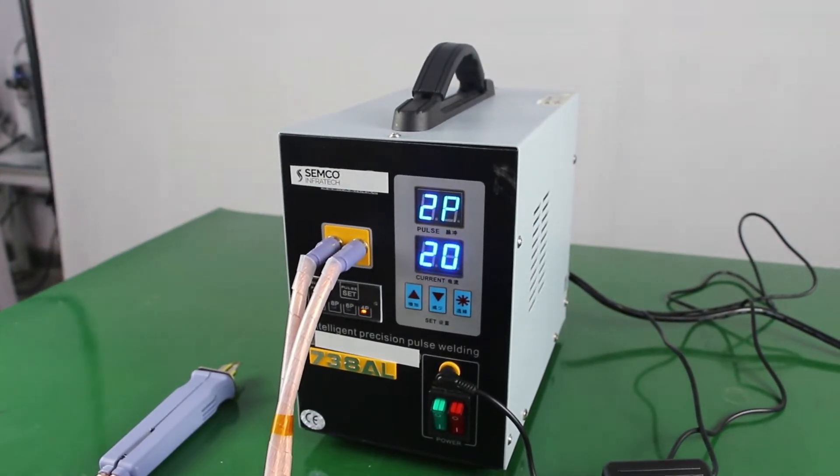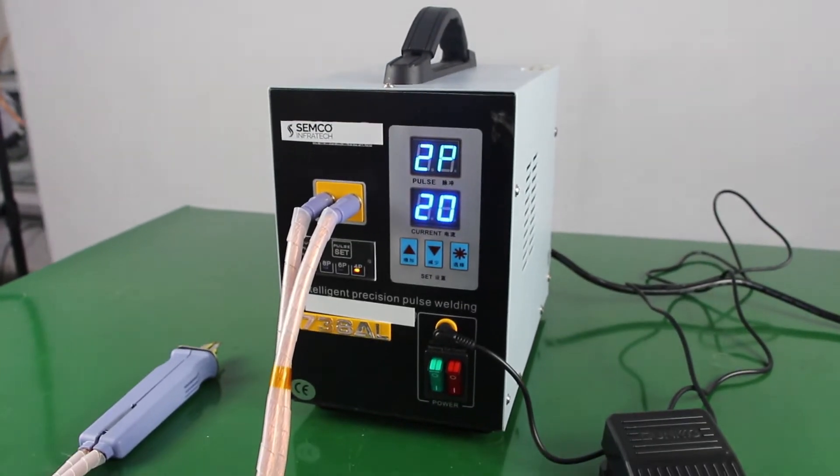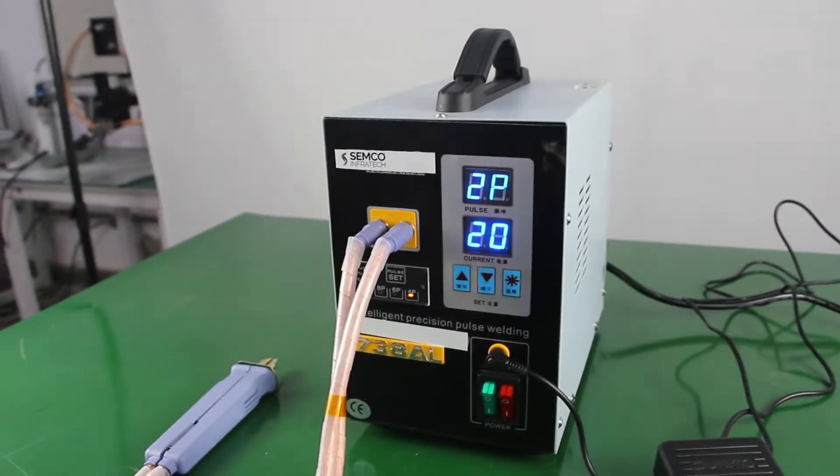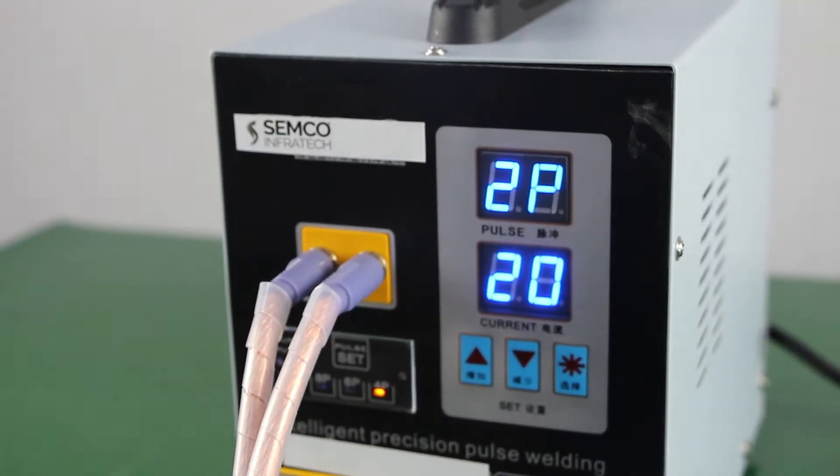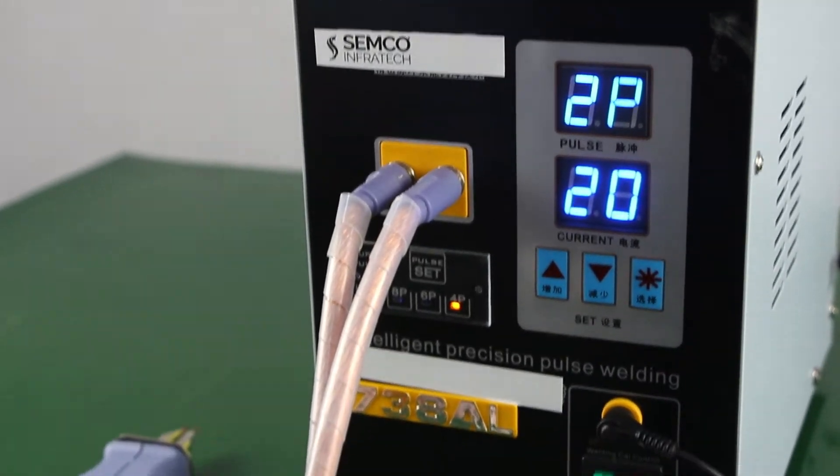Now let's talk about the specifications of this machine. This machine can weld 0.2mm pure nickel and 0.3mm nickel plated, and comes with a range of 0.05 to 0.3mm.